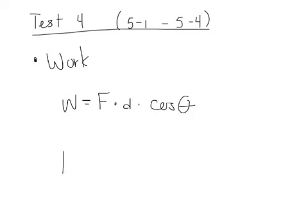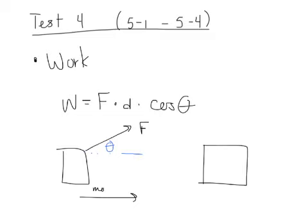For example, if I pull on a box with a force at an angle and it's moving to the right, I draw a little horizontal line here and that would be theta in this problem. If I pull on that same box but it's on a guided track that causes it to move upward, then I draw a vertical line instead to find theta. The direction of motion is what indicates the angle theta.